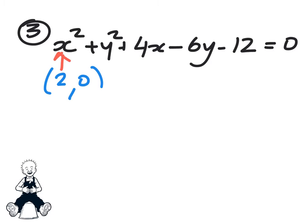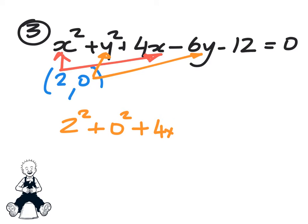the x numbers in the x space, the y numbers into the y spaces, and hopefully it should all end up as 0. So 2 squared plus 0 squared plus 4 times 2 and so on and so on and so on. Hopefully we're going to end up with a situation at 0 equals 0.